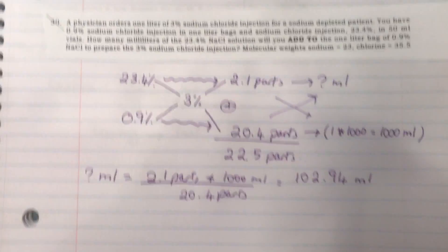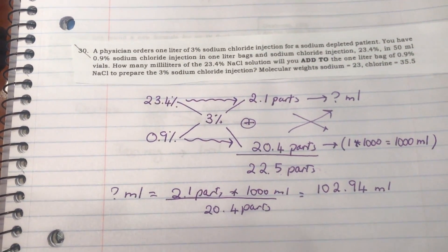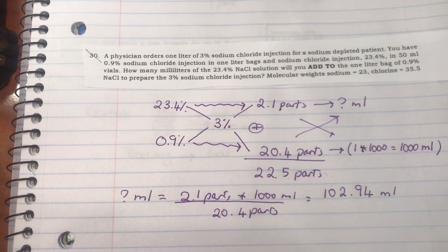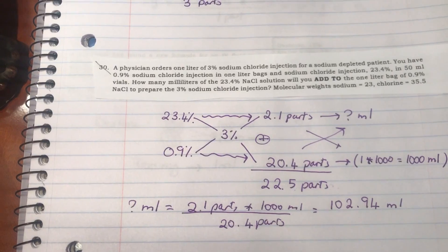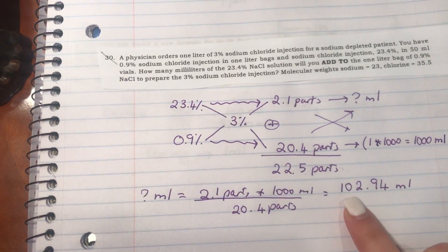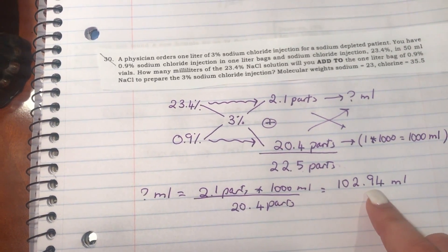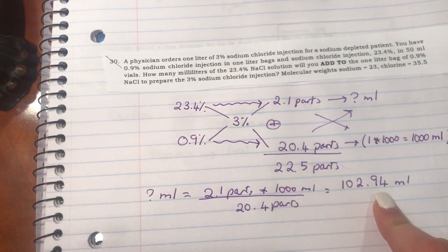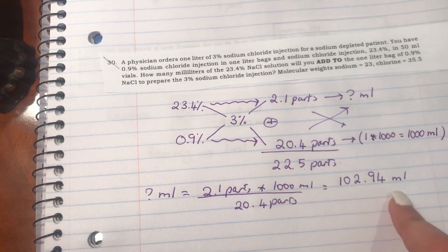Here in this question, it does not specify what you need to round to. Is it going to be to the nearest whole number, one decimal place, or two decimal places? If it's to the nearest whole number, then you're going to round that to 103 mL. If it's to the nearest one decimal place, it will be 102.9 mL. And if it's to the nearest two decimal places, then it'll be 102.94 mL.